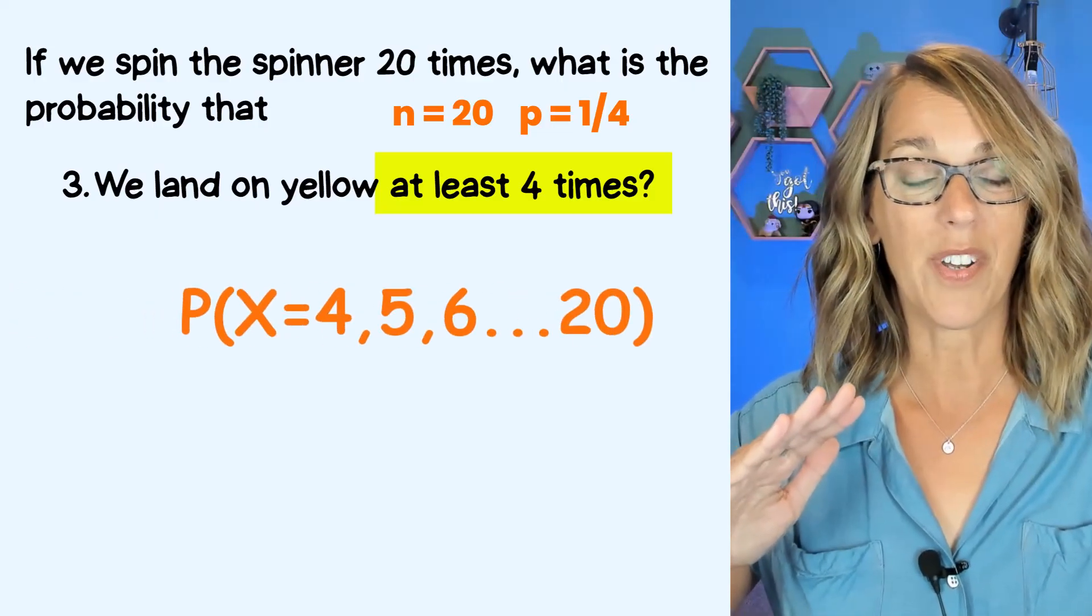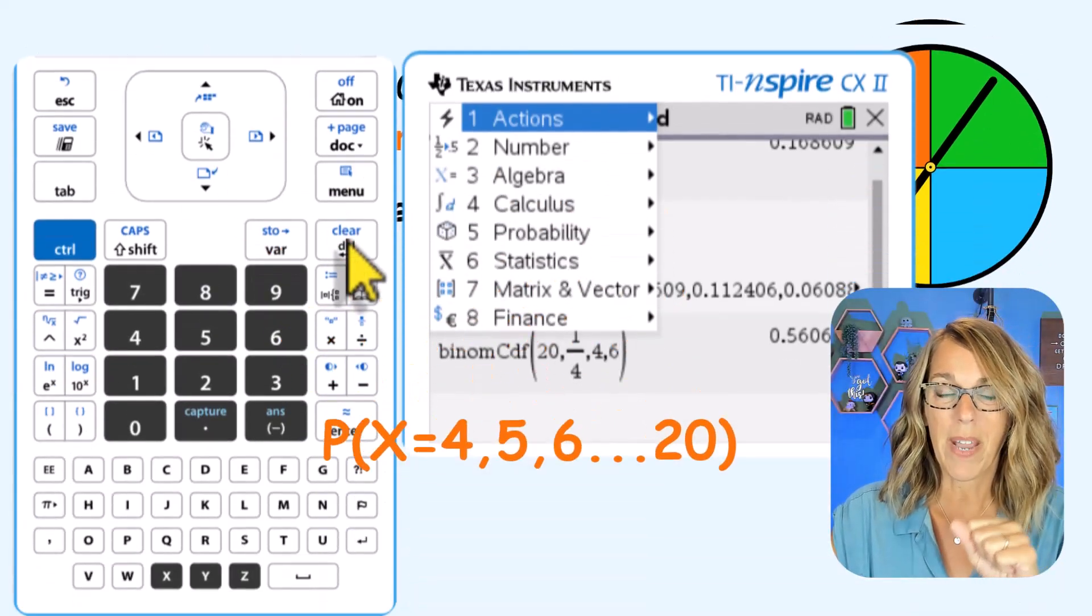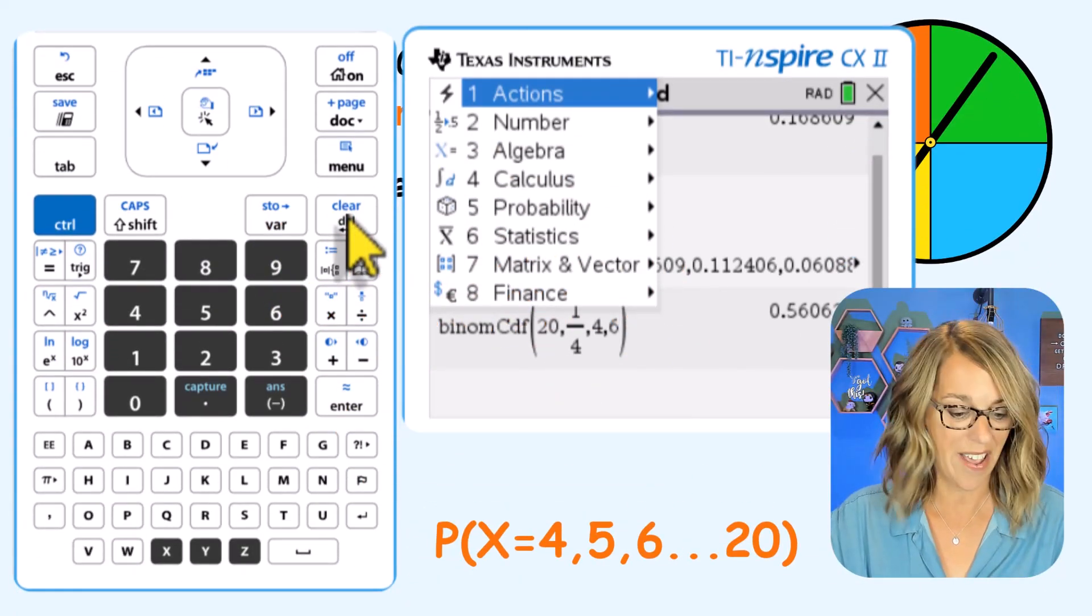So it's going to be four through 20. Similar to the last one, you could say between four and 20. So I'm going to use my binomial CDF.